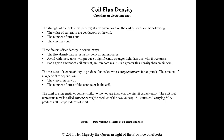The measure of a core's ability to produce flux is known as magnetomotive force or MMF. The amount of magnetic flux depends on the turns in the coil and how much current we have going through it. MMF is calculated as amps times turns — so a 10-turn coil carrying 50 amps produces 500 ampere-turns of MMF.